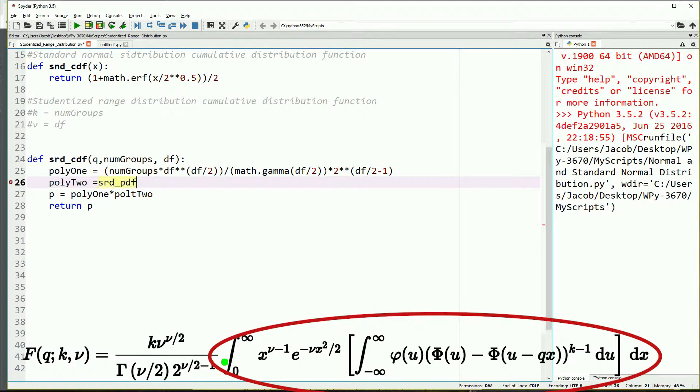That does it for polynomial 1. We'll do polynomial 2, and we're going to get this from a function. We'll call this srd_pdf_poly_2 and it will take our q, number of groups, and our degrees of freedom. Then we'll go ahead and start writing that function up here.